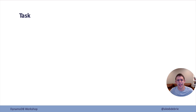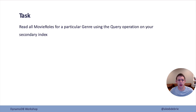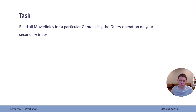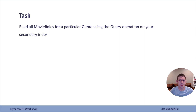The task is to use the query operation to read all movie roles for a particular genre using the query operation on your secondary index. Try querying for drama or something like that to find the drama movie roles. Take a few seconds and we'll come back and see how it's done.